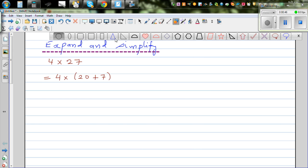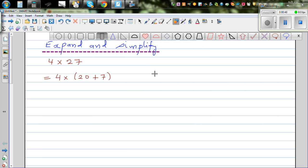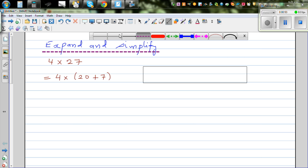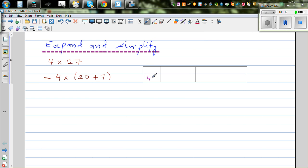You can also put this in a grid form if you want to understand in a grid form. So let's write this in a grid form. You can understand grid multiplication. I want to explain expanding in a grid multiplication form. This is 4 times, and you got 20 and 7 here.